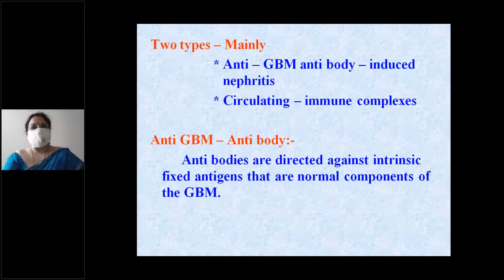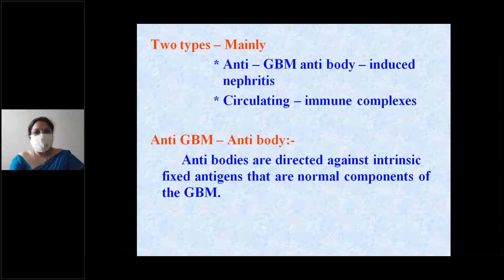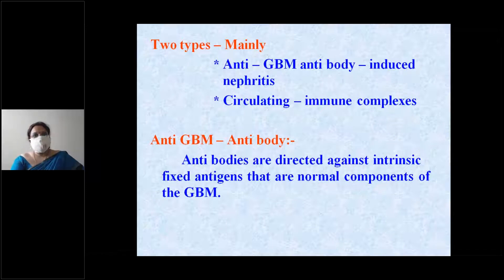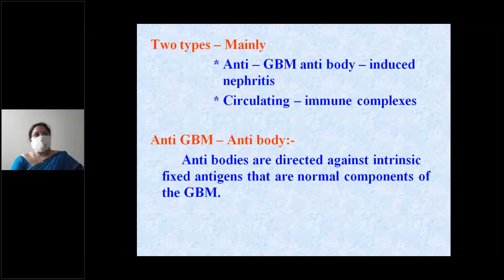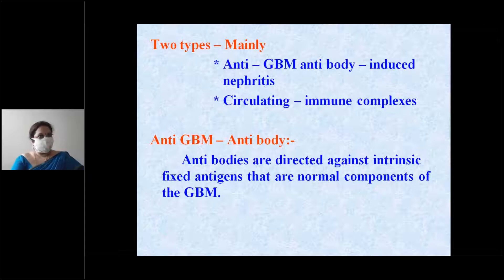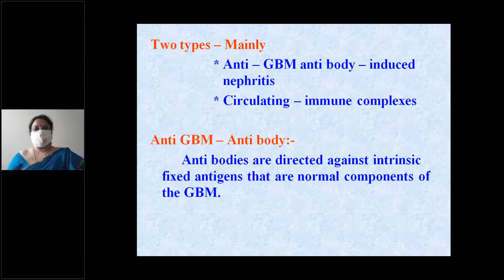Most importantly, glomerular injury is mainly immune-mediated. It can occur due to deposition of circulating immune complexes, or due to anti-GBM antibody-induced nephritis — antibodies against the glomerular basement membrane. So there are mainly two types: circulating immune complexes and anti-GBM antibodies.